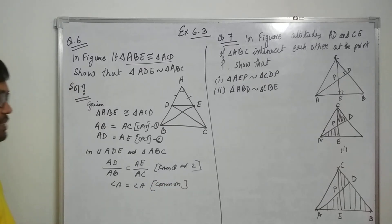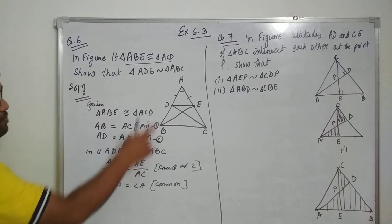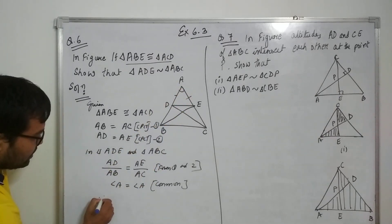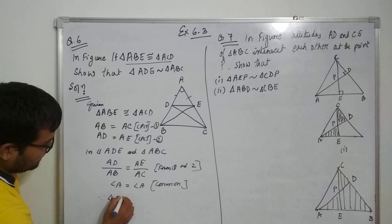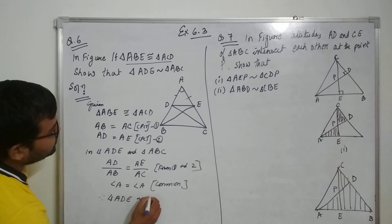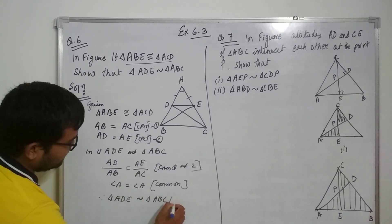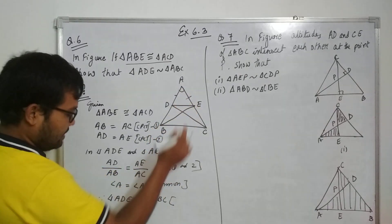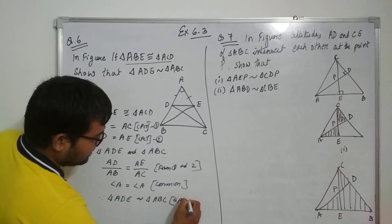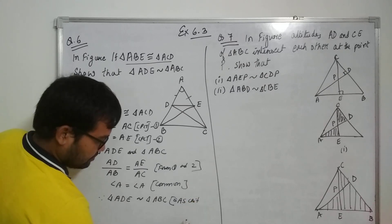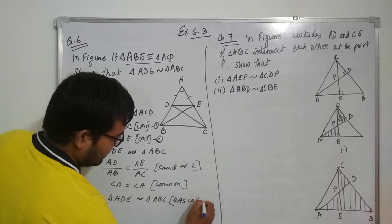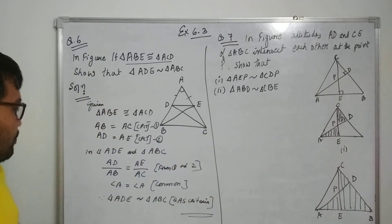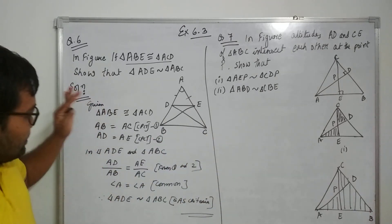If you observe this, we have the side-side proportion and also one common angle. Therefore triangle ADE is similar to triangle ABC. The criteria we have used is Side-Angle-Side — SAS similarity criteria. This is what we have proven — a very simple question, just go through it.